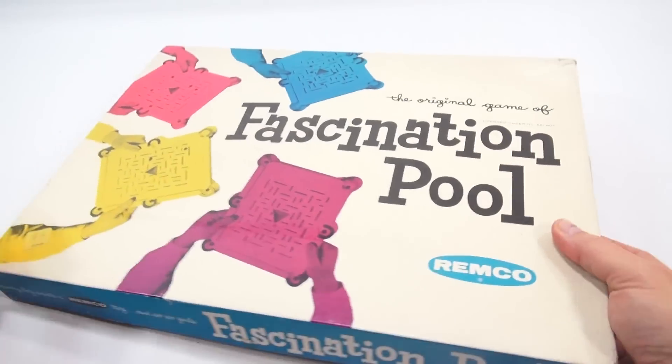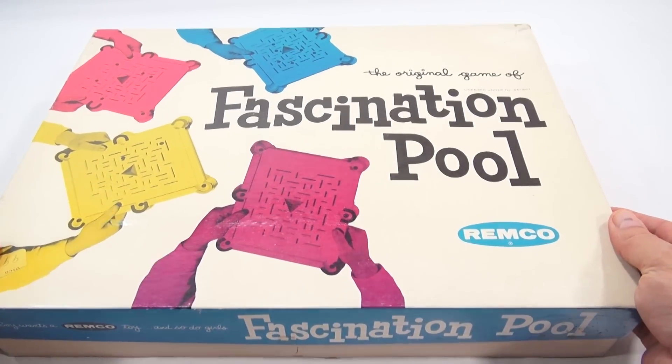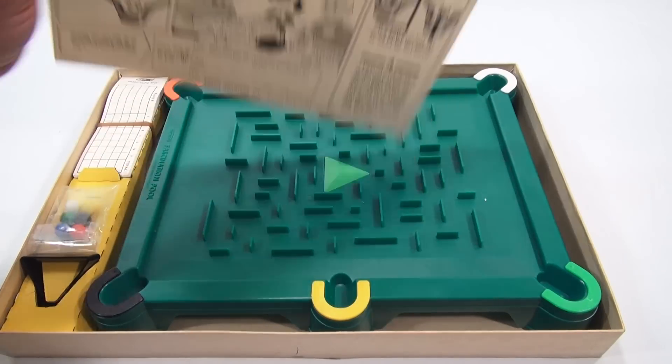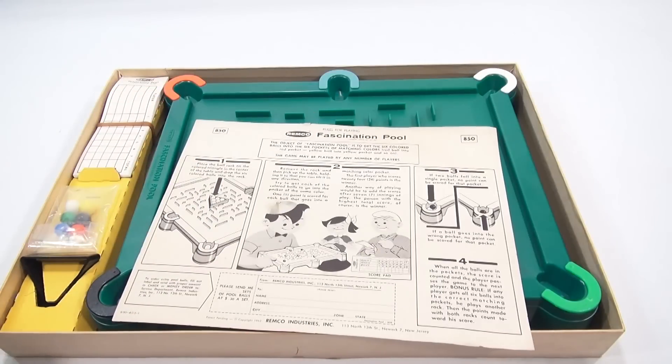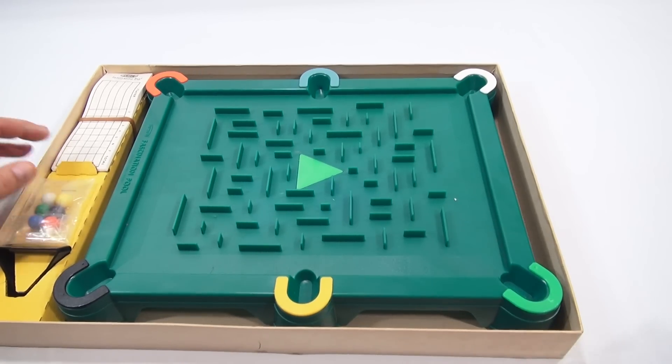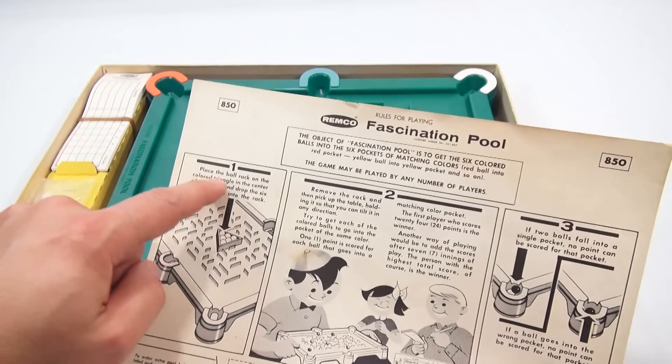Here we go, that is our instructions. It's a one-sided sheet and basically think of it as like a pool table. Let's take a look at it.